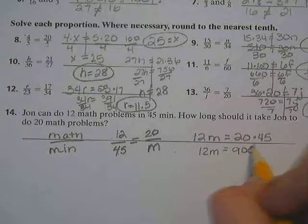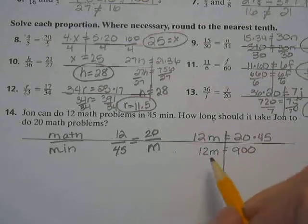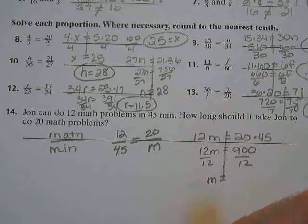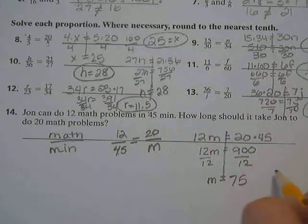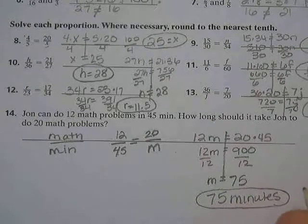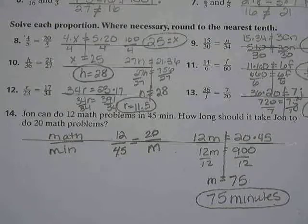12M has to equal 20 times 45. 20 times 45 is 900. What am I going to multiply or divide by to get M by itself? So 75 minutes. Hour and 15 minutes. Hour and 15 minutes to do 20 problems.